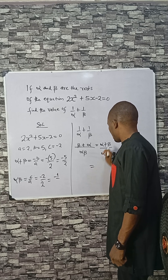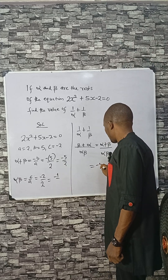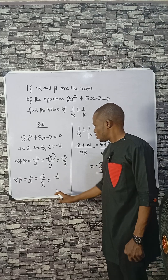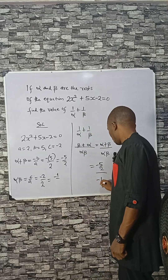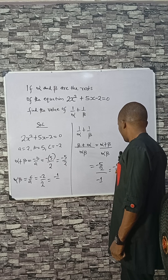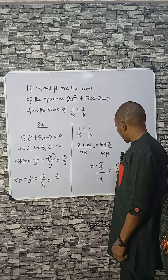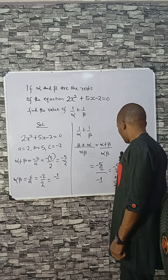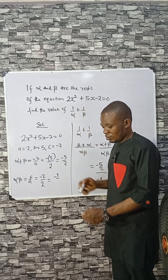Substituting: alpha plus beta is minus 5 over 2, divided by alpha beta which is minus 1. That gives minus 5 divided by 2 times minus 1. Minus and minus is plus, so the answer is 5 over 2.